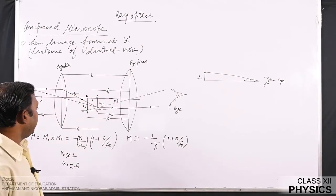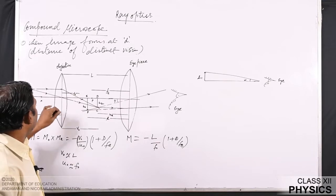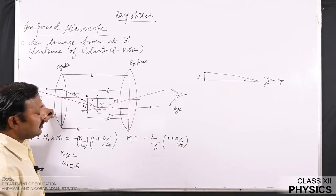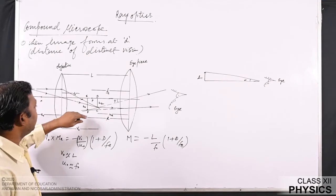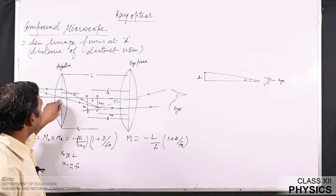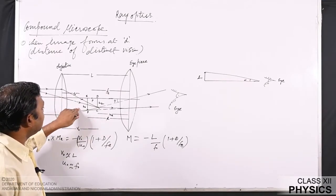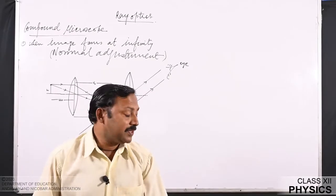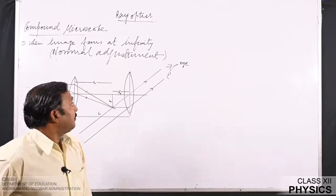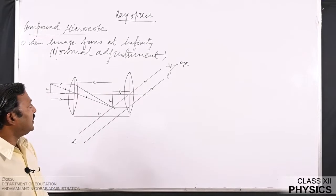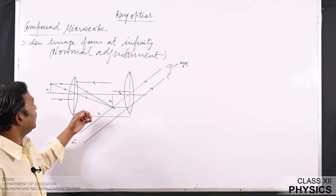Now we will see the remaining case: when the object is placed between the center and the focus point, and the image forms at the focus of the first lens, that is when the final image forms at infinity. We will now see the magnification produced by a compound microscope when the image is formed at infinity. A ray diagram is shown here.